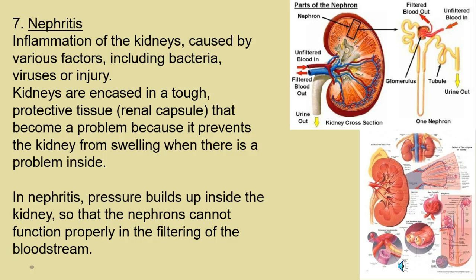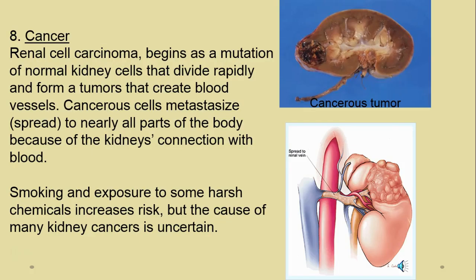Nephritis — the suffix '-itis' tells you there's inflammation or infection, but sometimes it's injury. That's why in boxing and most sports you're not allowed to hit from behind, because the kidneys are fragile and we cannot survive without them. The renal capsule is a protective structure, but if there's internal swelling there's nowhere for it to go, the nephrons suffer, and when the nephrons can't function we have kidney or renal failure.